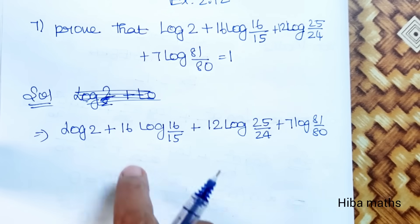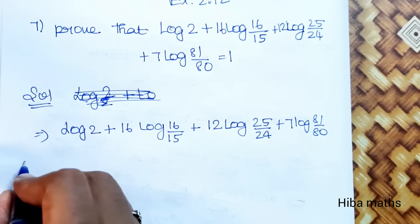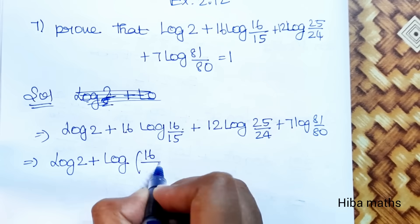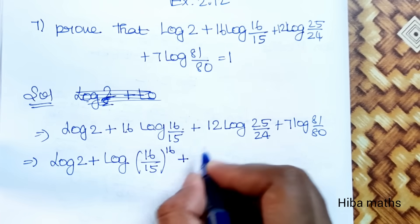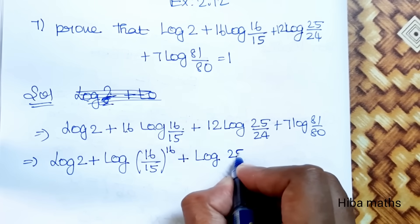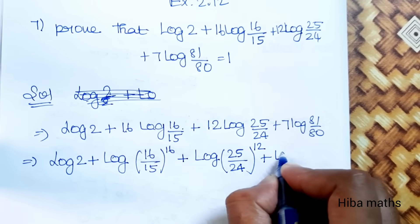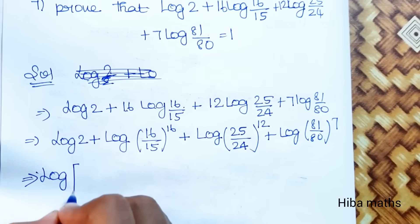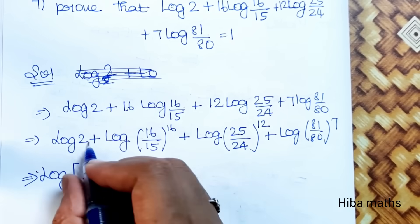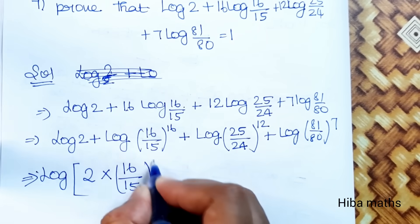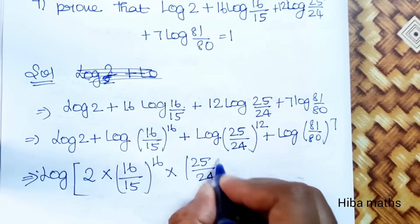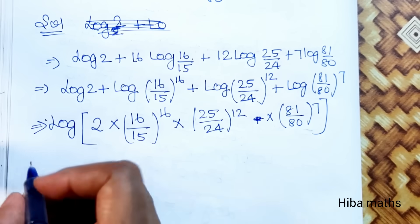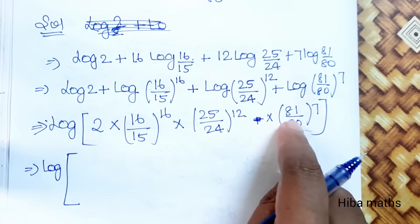For the solution, using the power rule method: log 3 equals power 2 log 2, plus 16 log(3), plus log(81/80) power 7. In logarithms, log addition becomes multiplication, so we multiply: 2 into (16/15) whole power 16, into (25/24) whole power 12, into (81/80) whole power 7. Now solve by prime factorization.